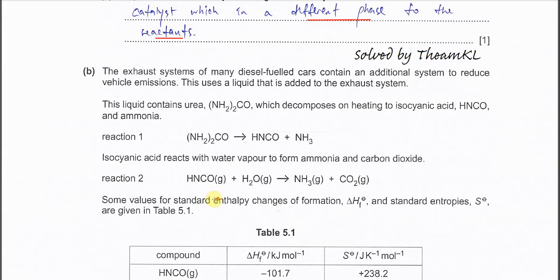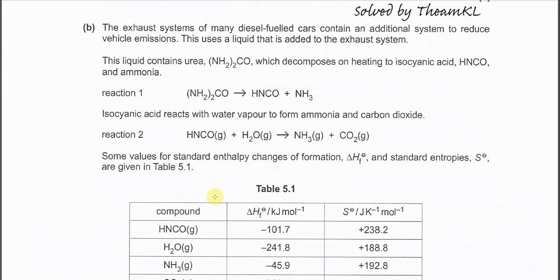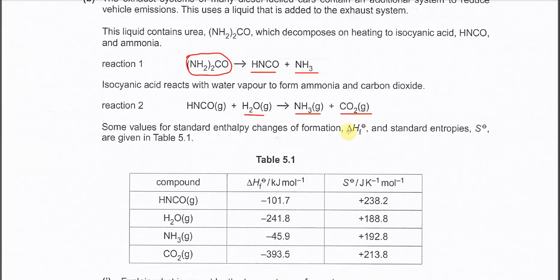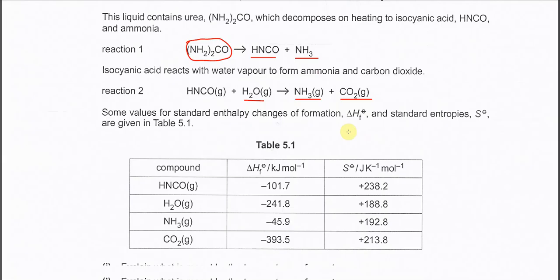Part B. We have two reactions. Urea will form isocyanic acid — HNCO — and ammonia. After that, this isocyanic acid will further react with water vapor to form ammonia and CO₂. We are going to use the data in Table 5.1, which provides the ΔHf and entropy values for the Gibbs energy calculation later.